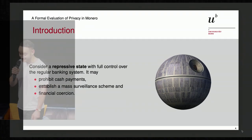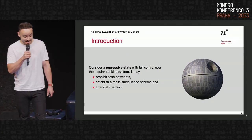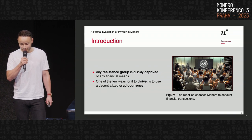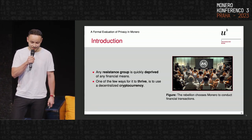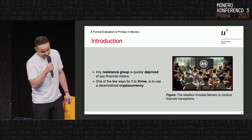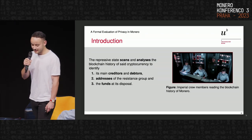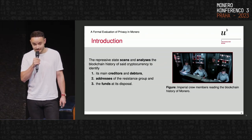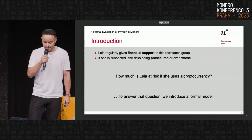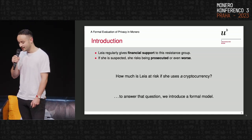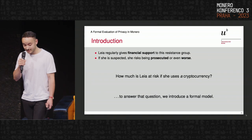For the intro, consider a repressive state with full control over the regular banking system. It may prohibit cash payments, establish a mass surveillance scheme, and engage in financial coercion. Now consider a resistance group — it's quickly deprived of any financial means, and one of the few ways for it to thrive is to use a decentralized cryptocurrency. The repressive state knows that and scans and analyzes the blockchain history to identify the main creditors and debtors of the resistance group, their addresses, and the funds at its disposal. Now Leia regularly gives financial support to that resistance group.